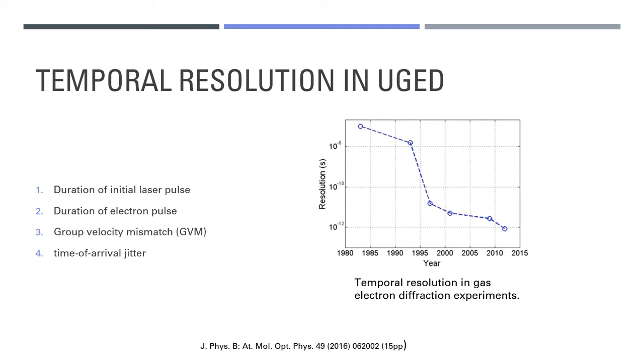These effects can be limited by using a high extraction field on the photocathode and placing the gas sample closer to the photocathode. This has managed to improve the temporal resolution for condensed matter systems, but it isn't as easy for gas phase systems. A high extraction field requires a high vacuum, which doesn't really work when there's a gas source at a short distance from the photocathode. A short propagation distance also does not solve the problem of the group velocity mismatch, which does tend to be the limiting factor.